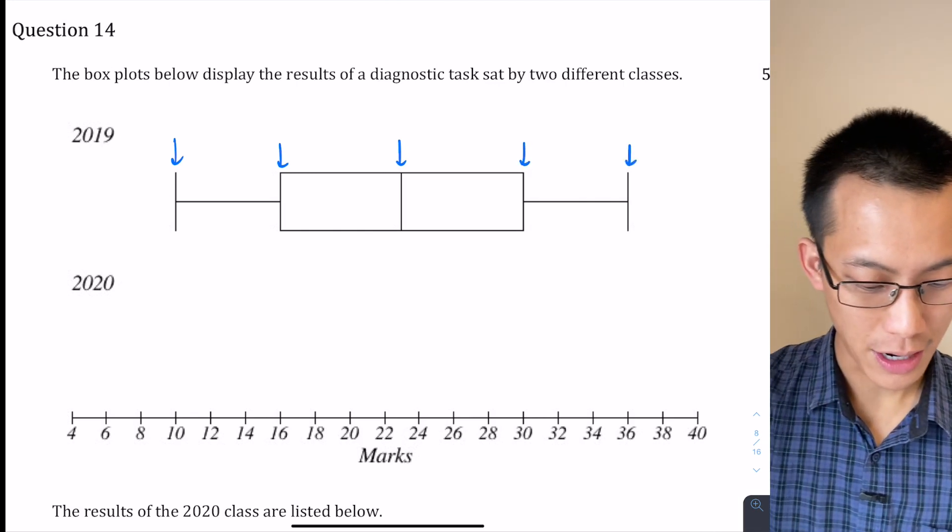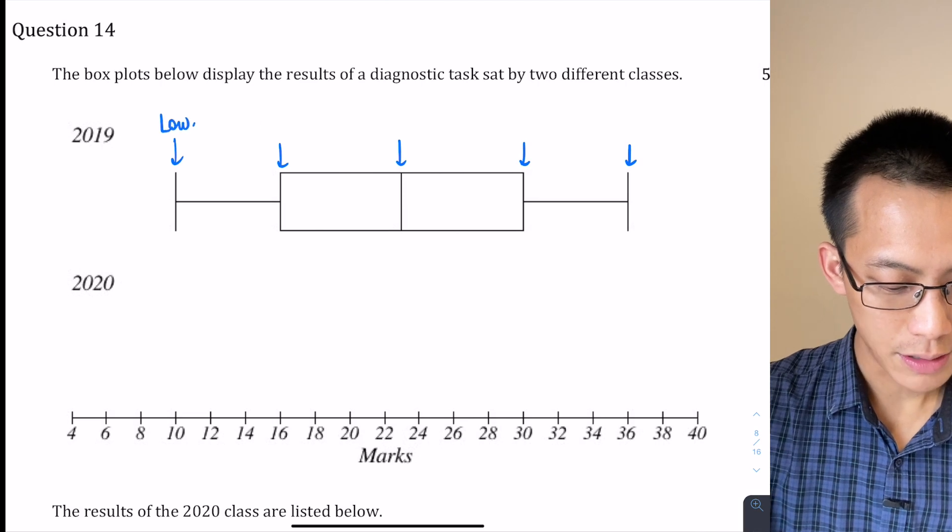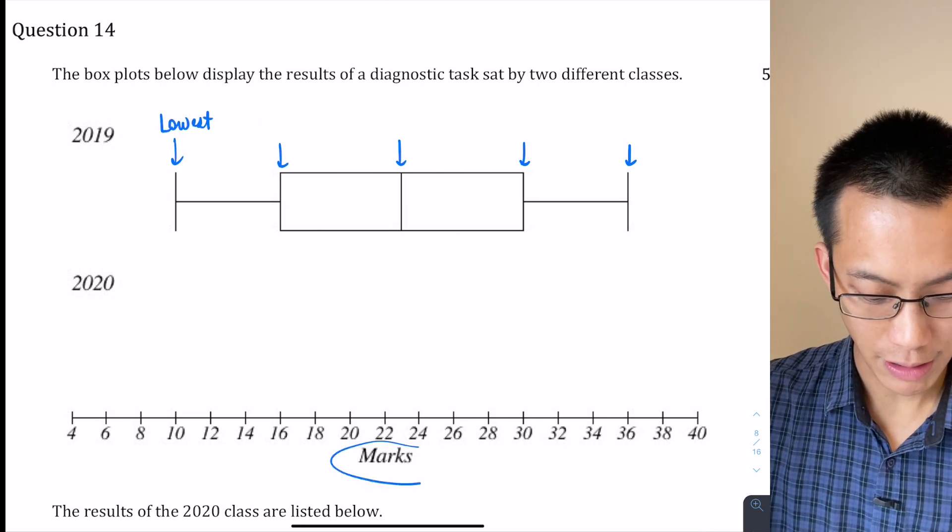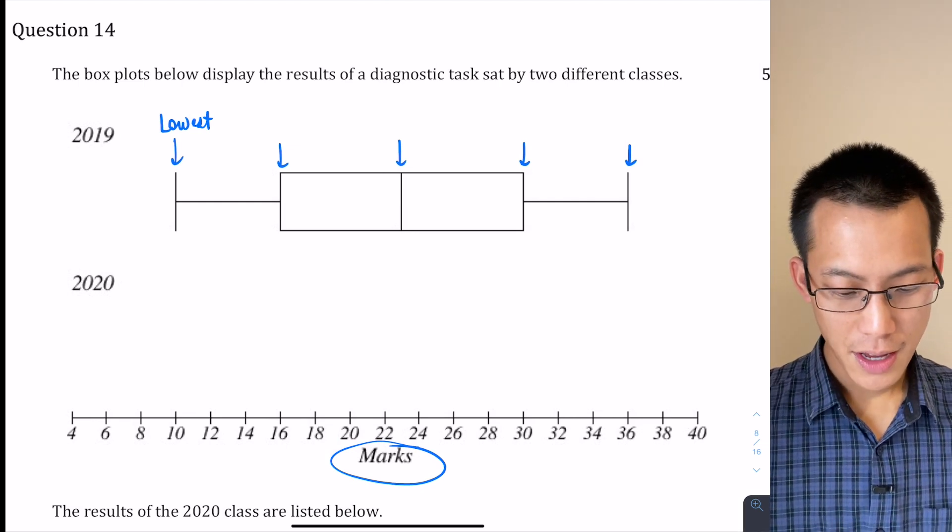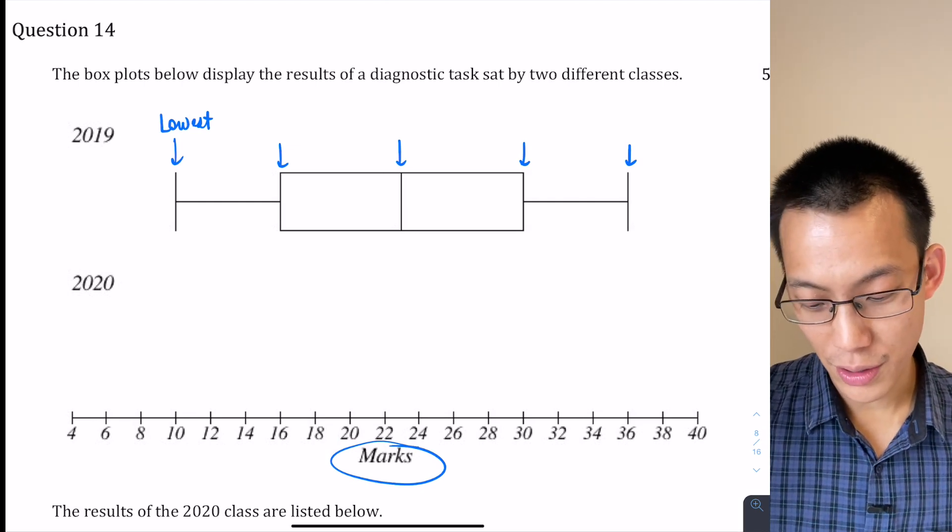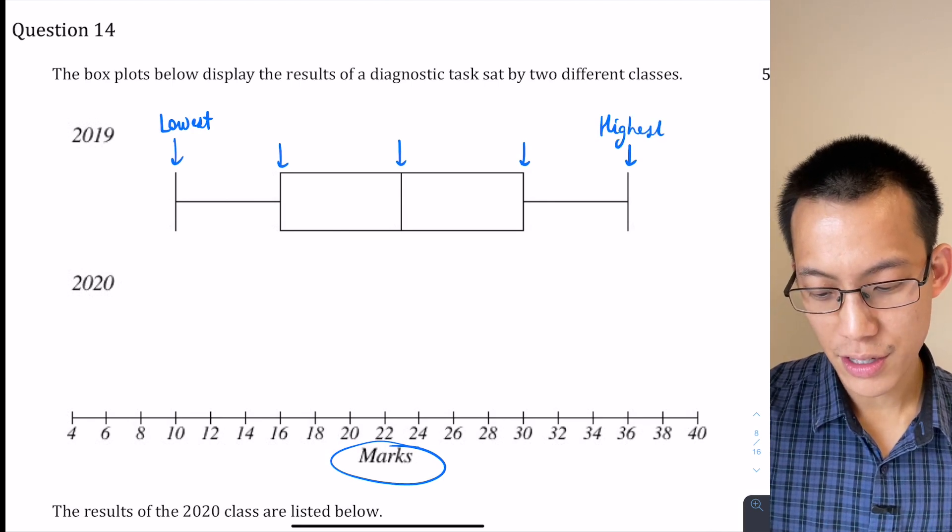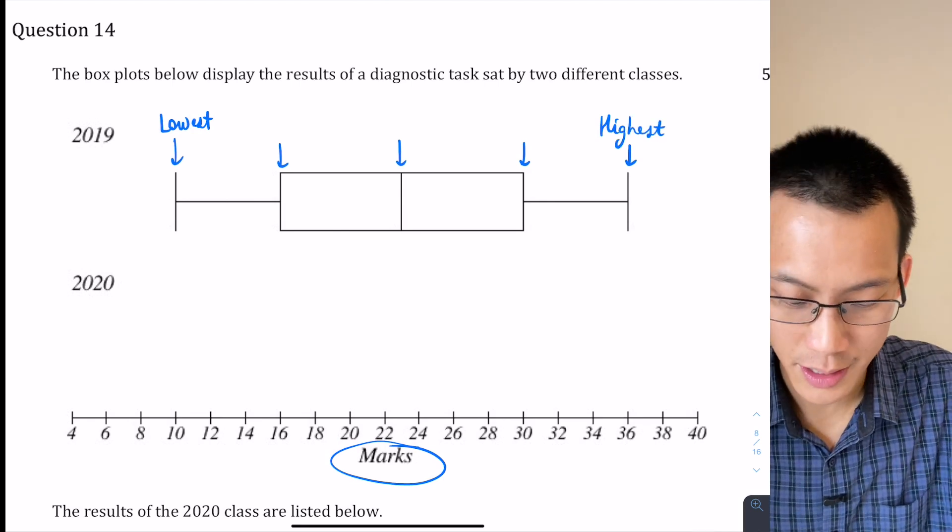If we go in order, you've got the lowest score down here. If you have a look at the horizontal axis here for the marks, you can see they go from lowest to highest. So there's the lowest score, and going all the way to the other end, here's the highest score on the right-hand side.